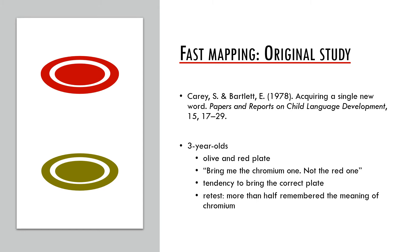Fast mapping was introduced by Susan Carey and Elsa Bartlett. They ran an experiment with three-year-olds, presenting children with an olive and a red plate, then asking them to 'bring me the chromium one, not the red one.' In most cases, children brought the correct plate. After one week, they tested the children on the word 'chromium,' and more than half knew what it meant. The important finding was that the children heard the form 'chromium' only once and were able to map it correctly to its meaning.